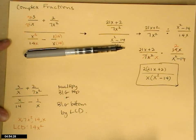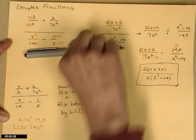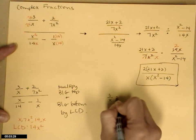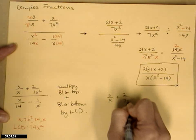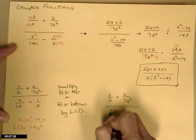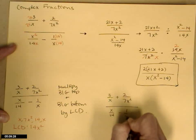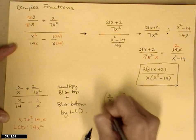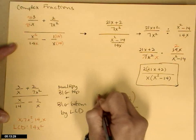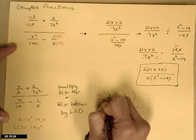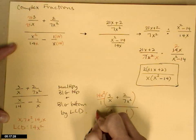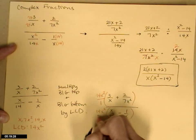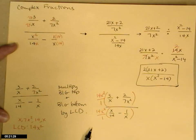So 14x squared is going to work for me. Everybody up here goes into 14x squared. So I'll go ahead and recopy one more time. 3 over x plus 2 over 7x squared, over x over 14 minus 1 over x. And I'm going to multiply the big top by 14x squared over 1, and the big bottom by 14x squared over 1.